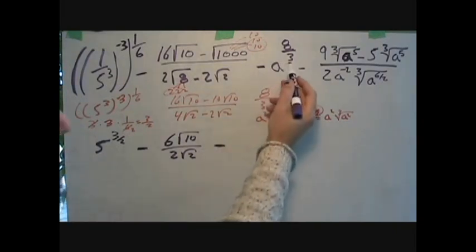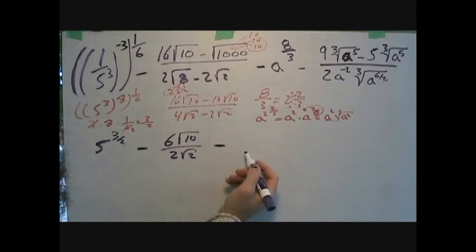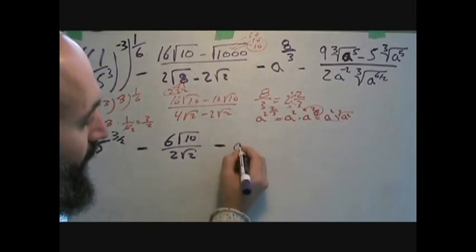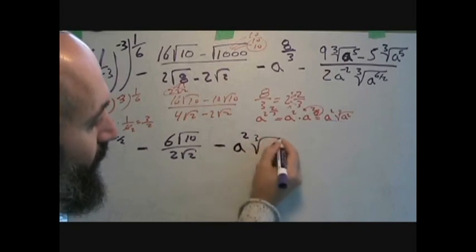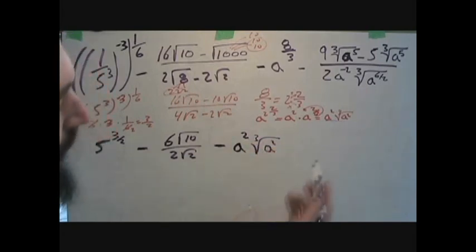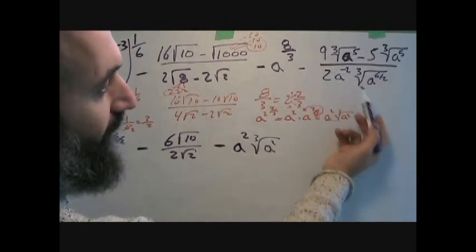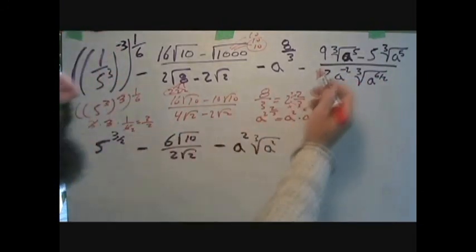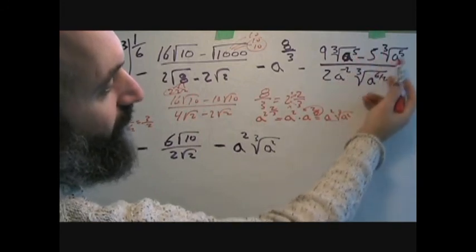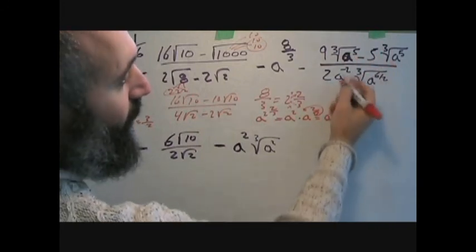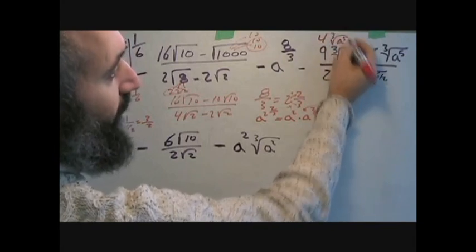So we go directly from a to the eight-thirds to its simplest form: a squared times the cube root of a squared. Over here these are like terms and can simplify straight away: 9 times the cube root of a to the fifth minus 5 times the cube root of a to the fifth just becomes 4 times the cube root of a to the fifth.